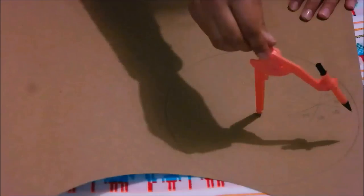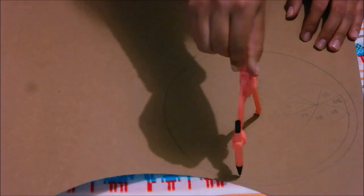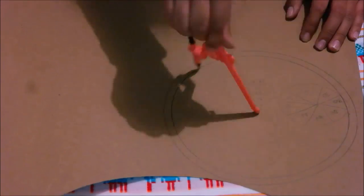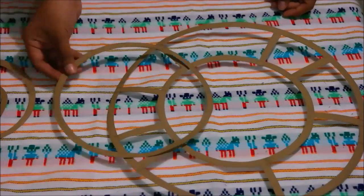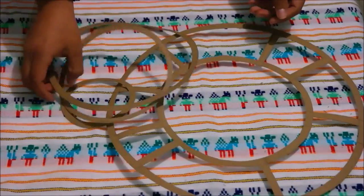Trace and cut out three more circles. Their sizes depend on the size of your clock hands. Paint the frame and the circles with golden acrylic paint.